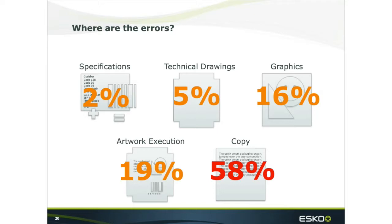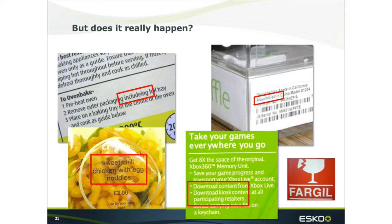A survey by a leading brand concluded that the majority of packaging errors are due to the management of copy. These errors don't always get found in the production process, which can lead to damage to your brand and consumer confidence. The typical process is fragmented and manual: text copy is authored, approved, and validated in various documents or emails, then sent to the artwork department to be made into the packaging, where it's copied and pasted — or sometimes retyped — into an artwork file. This is a very error-prone process, especially when updates are made to the copy, requiring art workers to track changes across numerous files.